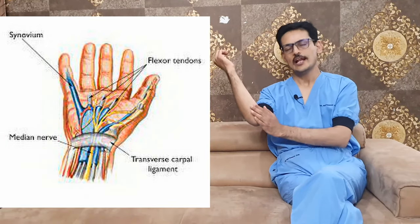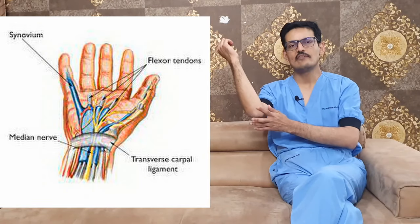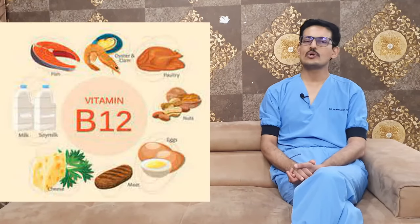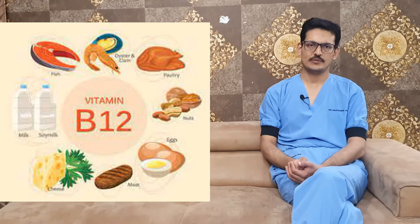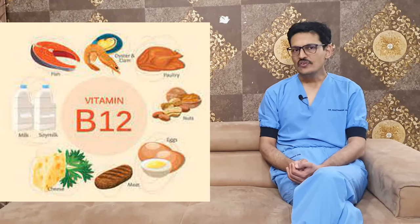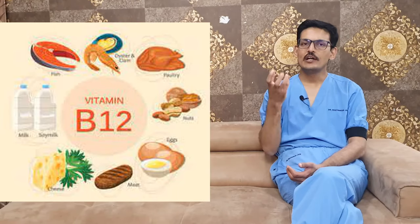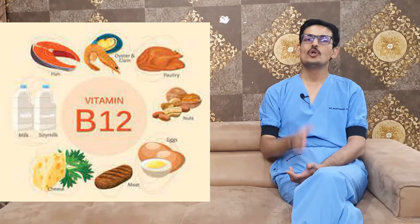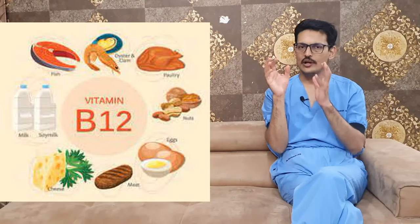The same applies to the elbow, which is called cubital tunnel syndrome. The second most common cause of numbness in the hand is vitamin B12 deficiency. Vitamin B12 is a water-soluble vitamin that acts as a nerve tonic, and if this vitamin is deficient, you will have problems relating to numbness in your hands.